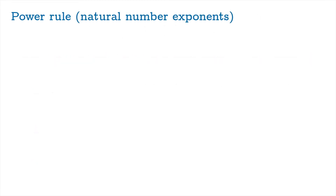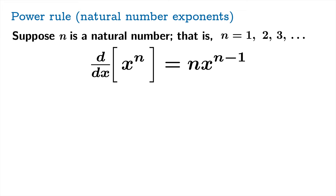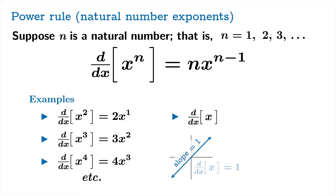The power rule for natural numbers: suppose n is a natural number; the derivative of x to the n with respect to x is n times x to the n minus 1. It's worth noting that the derivative of x itself — a linear function with slope 1 everywhere — should be 1. In the context of the power rule, x is x to the first power, giving 1 times x to the zero, which is 1. So it works in that case as well.